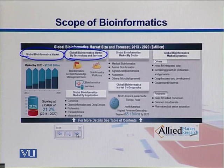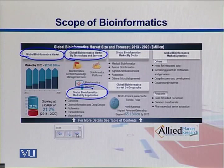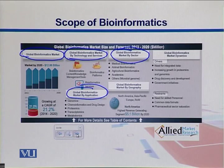Most biologists need help with the analysis of their data. The market is also explored by applications — topmost is genomics, then cheminformatics and drug design. There are also projects going on in proteomics, transcriptomics and metabolomics. Looking at the global market by sector, medical bioinformatics is at the top, followed by animal bioinformatics, agricultural bioinformatics, academia, and a lot of projects and funding going towards microbial genomes.